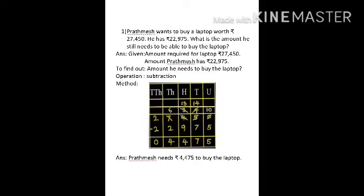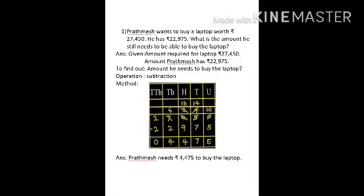0 minus 5 is not possible because 0 is smaller than 5, so we borrow 1 from the 10s. So 0 becomes 10 and 5 becomes 4. Now 10 minus 5 is 5. Next, 4 minus 7 is not possible, so we borrow 1 from the 100s — it becomes 14, and 14 minus 7 is 7. In the 100s column, 3 minus 9 is not possible, so we borrow from the 1,000s — 3 becomes 13, and 13 minus 9 is 4. In the 1,000s column, 6 minus 2 is 4, and in the 10,000s column, 2 minus 2 is 0. So Prathamesh needs Rs. 4,475 to buy the laptop.